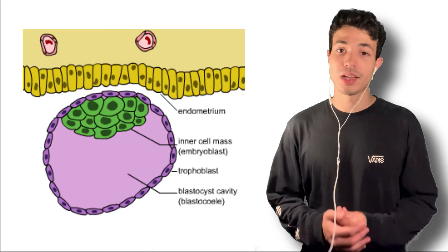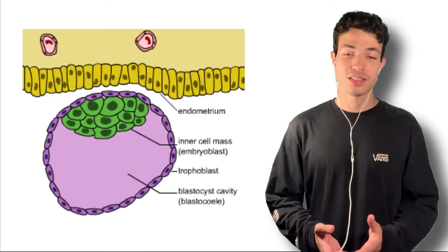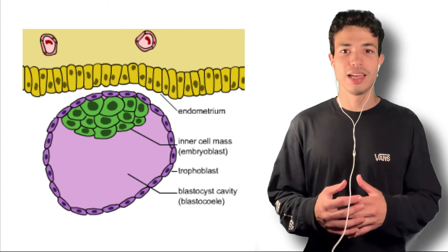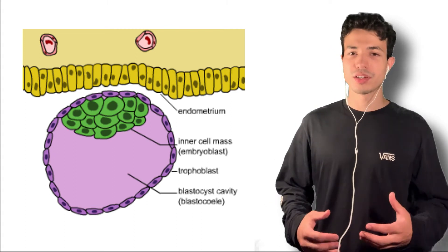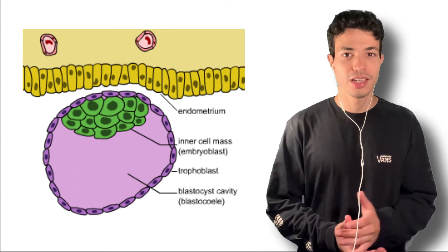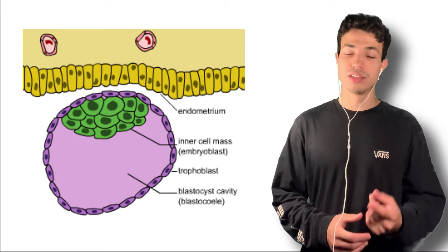I'm recording this on a different day — that's why I changed clothes — but the video we were just watching is not of a human embryo, as that would raise ethical questions, but it is the same process and we can still learn from it. Right now we have a blastocyst in the uterus, and this blastocyst is composed of different types of cells because we've had that first differentiation.